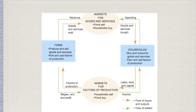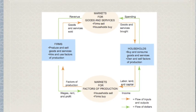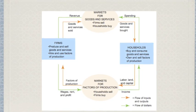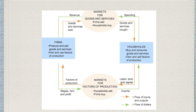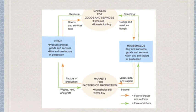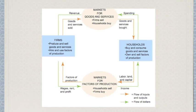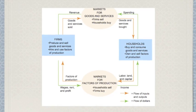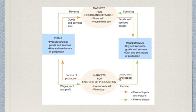It is important to note two things. In some places this model is depicted with four stops in the circle: firms, households, market for goods and services, and market for factors of production. These markets simply denote that trade is taking place between some form of money and goods and services, or factors of production.